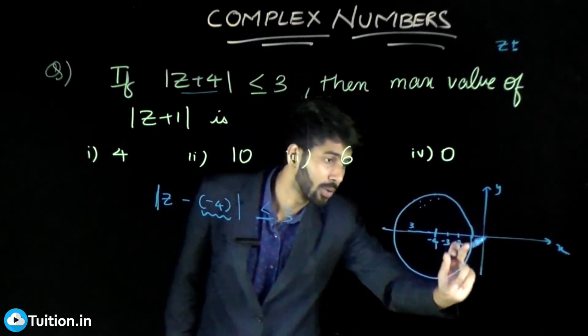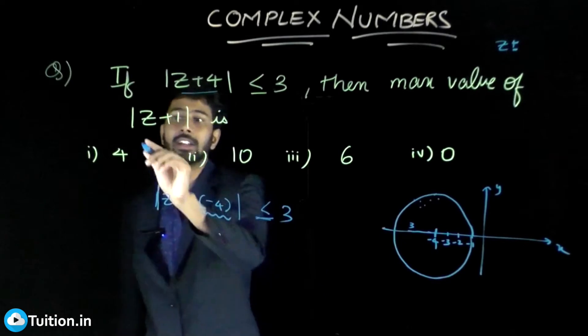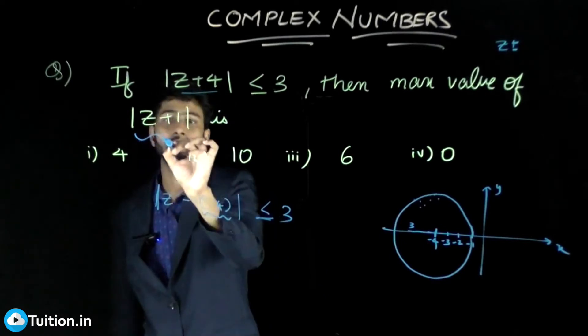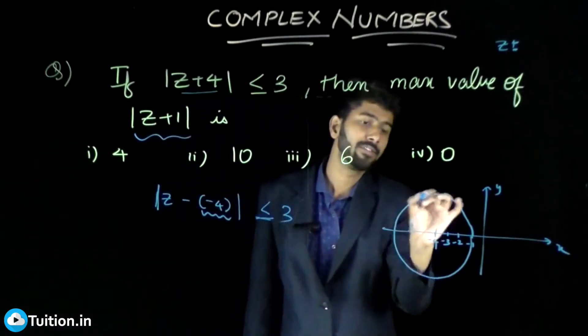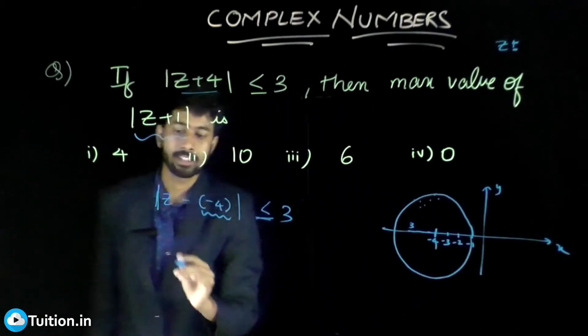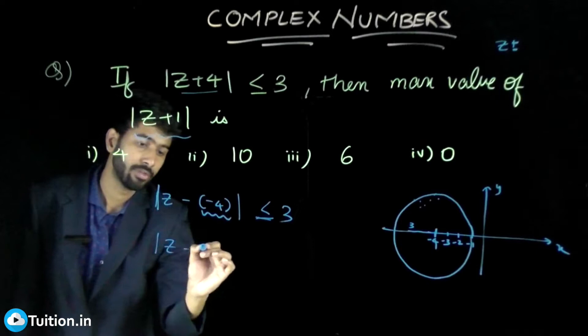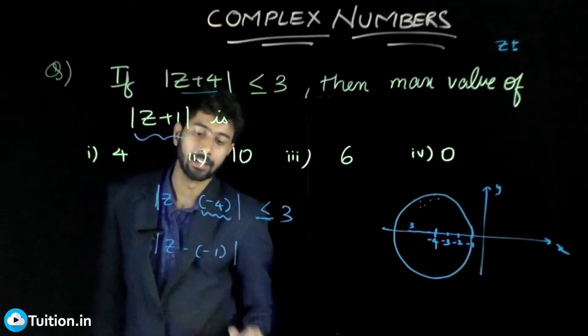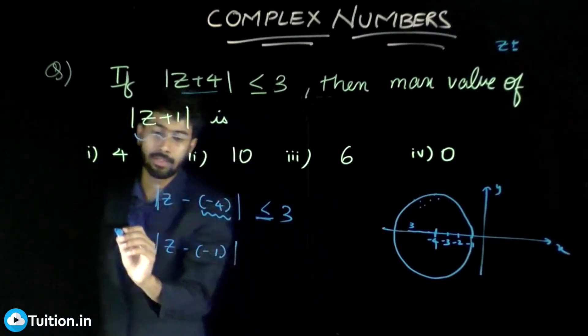Now from this, you need the maximum value. So there are infinite such z's here. z plus 1 means distance of z from minus 1. You need the maximum value of this.